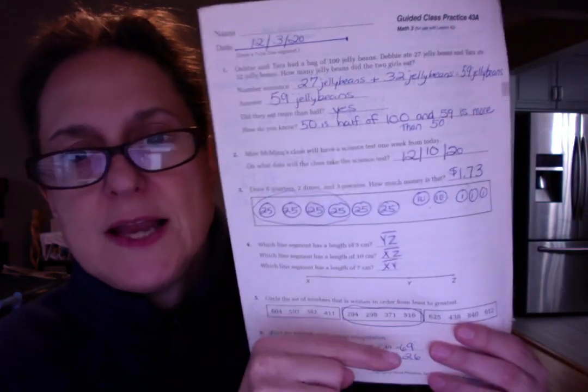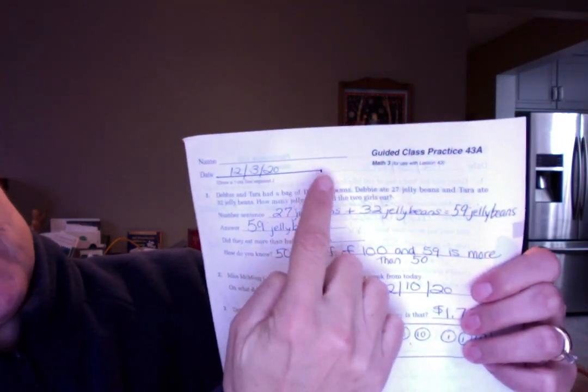Okay, this is lesson 43 side A. So you were supposed to write your name and draw a 7 centimeter line segment and don't forget to put that end point there. And I happen to do this on 12-3-20. Okay.